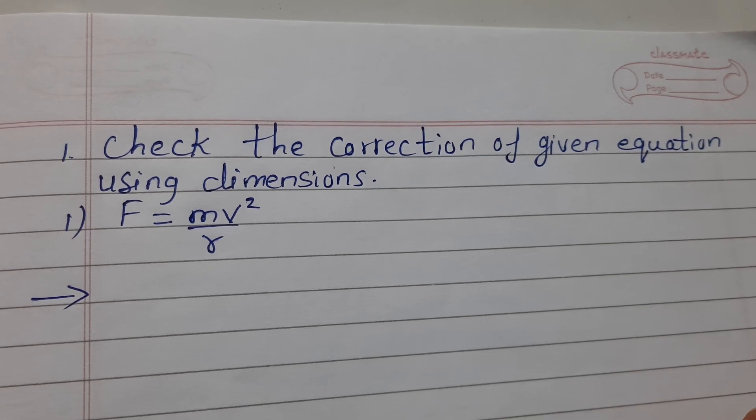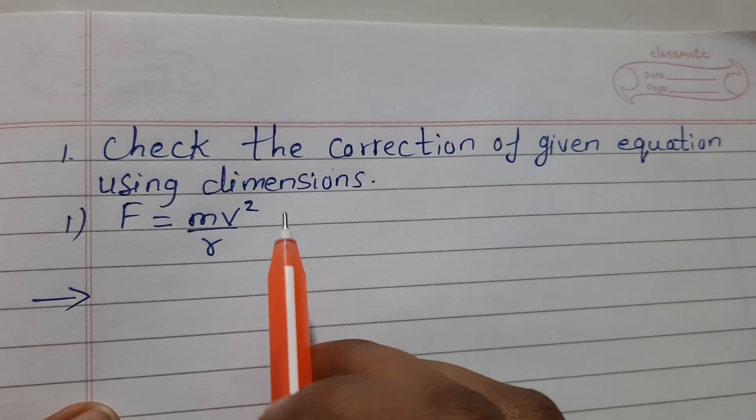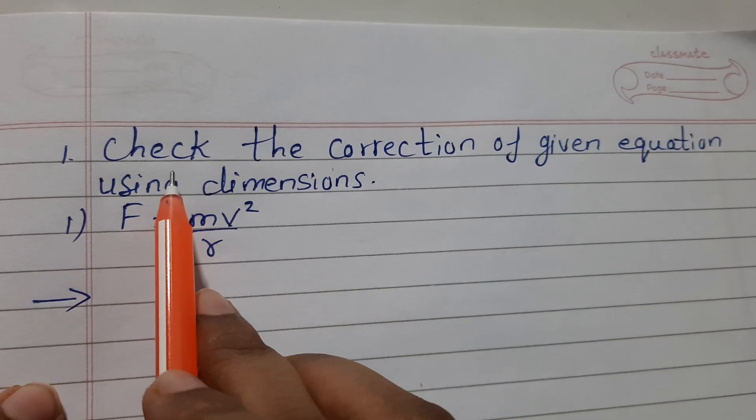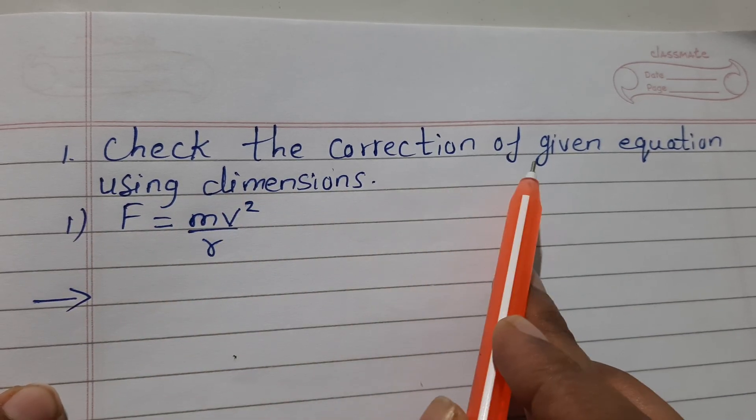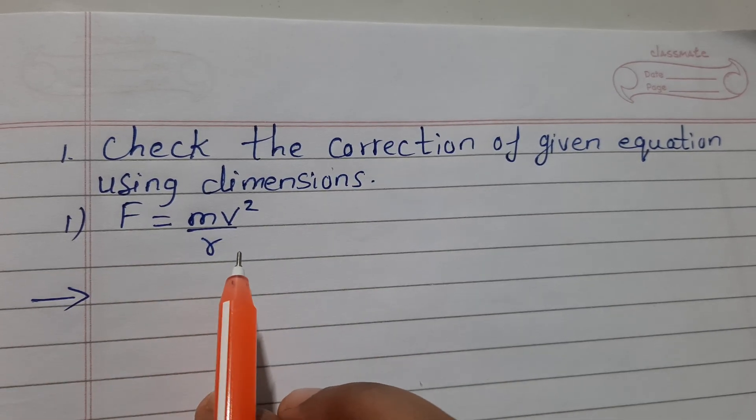Welcome to today's class of physics. This is chapter units and dimensions. Today's question is: check the correction of given equation using dimensions. F = mv² upon r is given to you all.